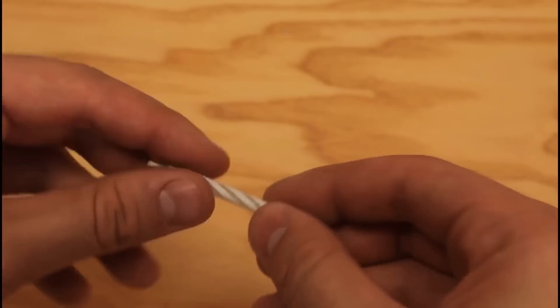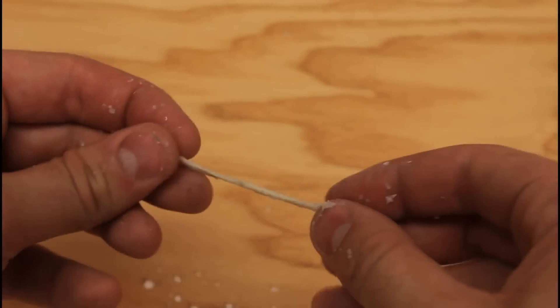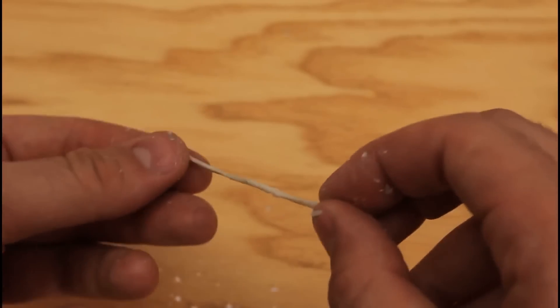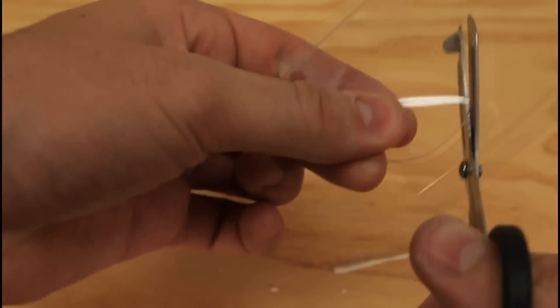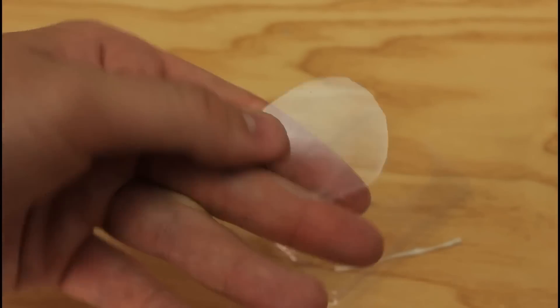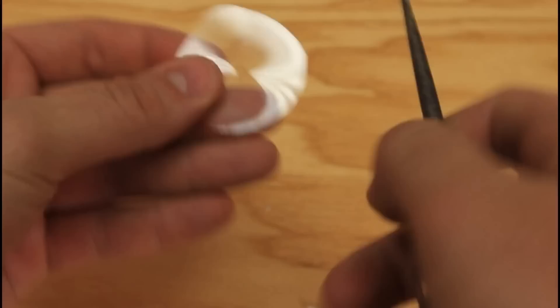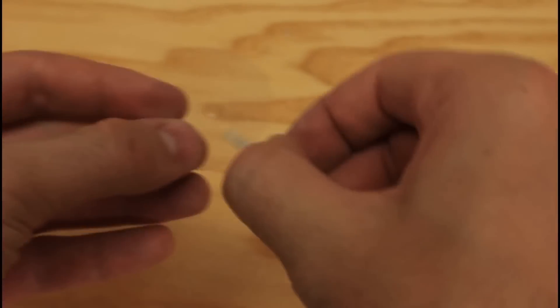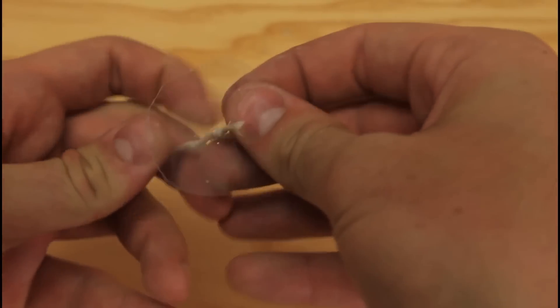First we will take one of the birthday candles and take off the wax from it. So we're gonna just take the wick out of the candle. Then we will need to cut a piece out of clear plastic, something like that. Then we will make a hole right in the middle, but this big. So this will push through here. The wick.